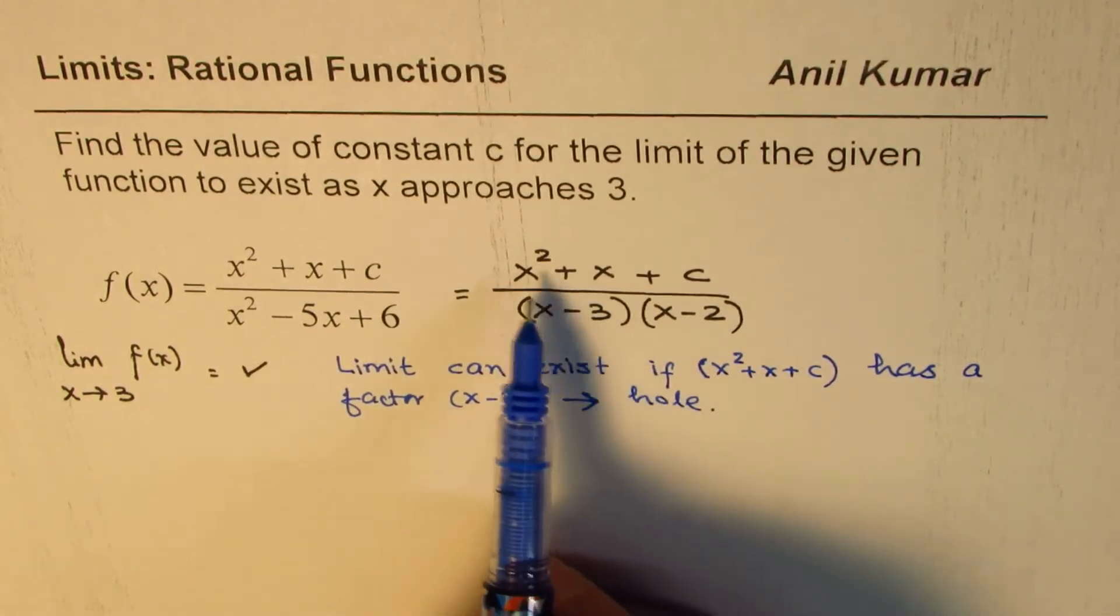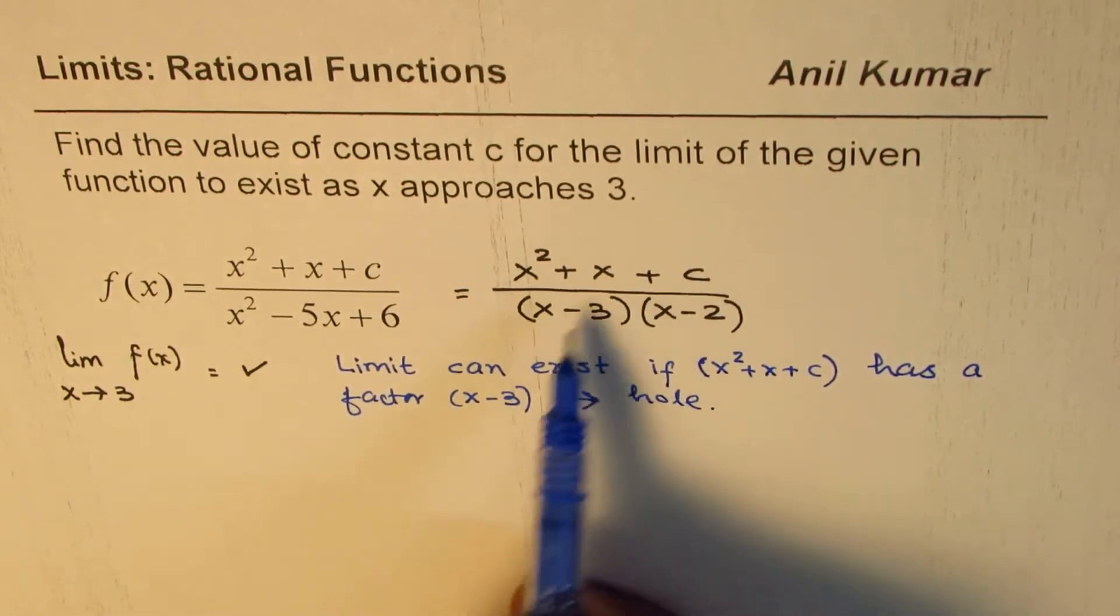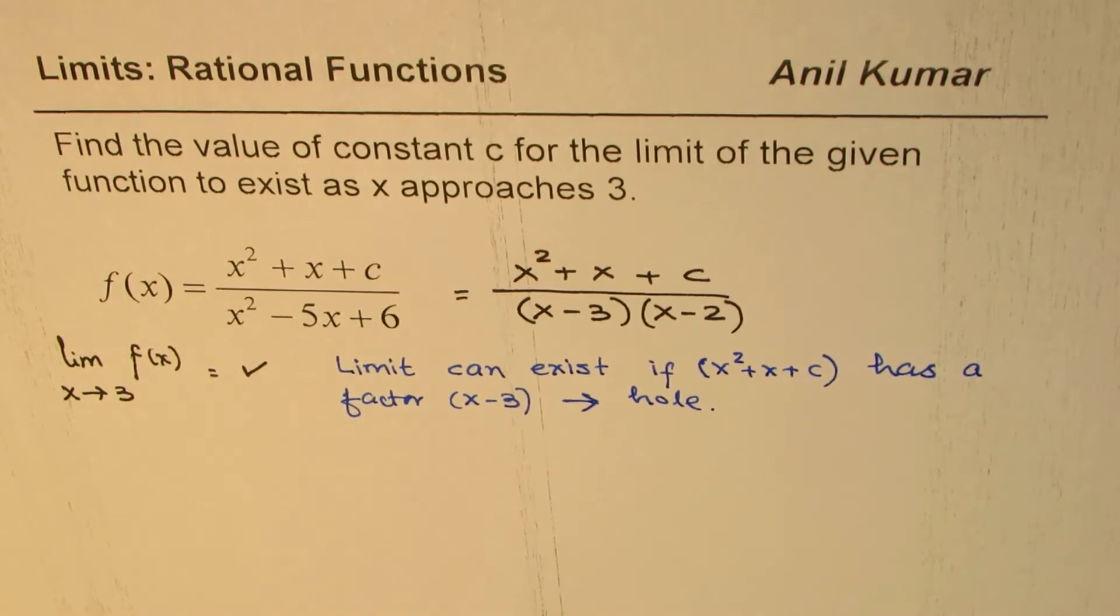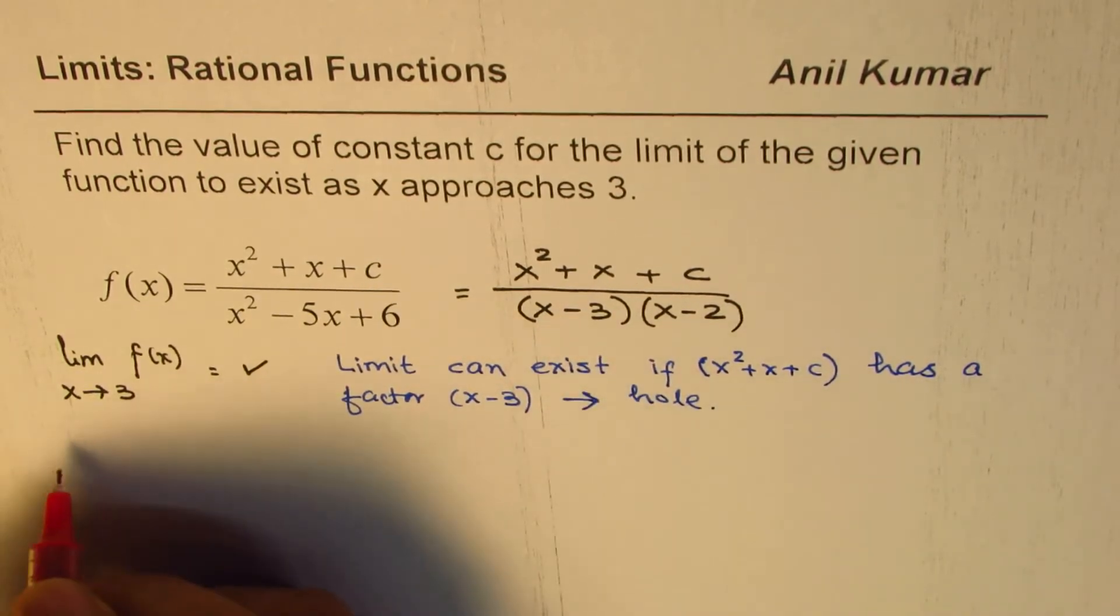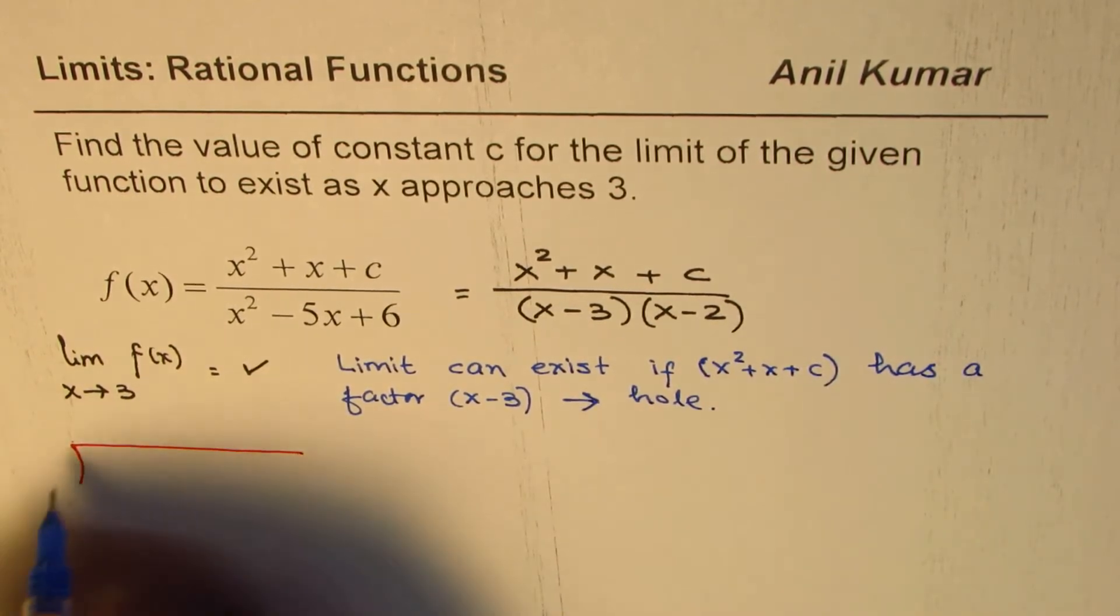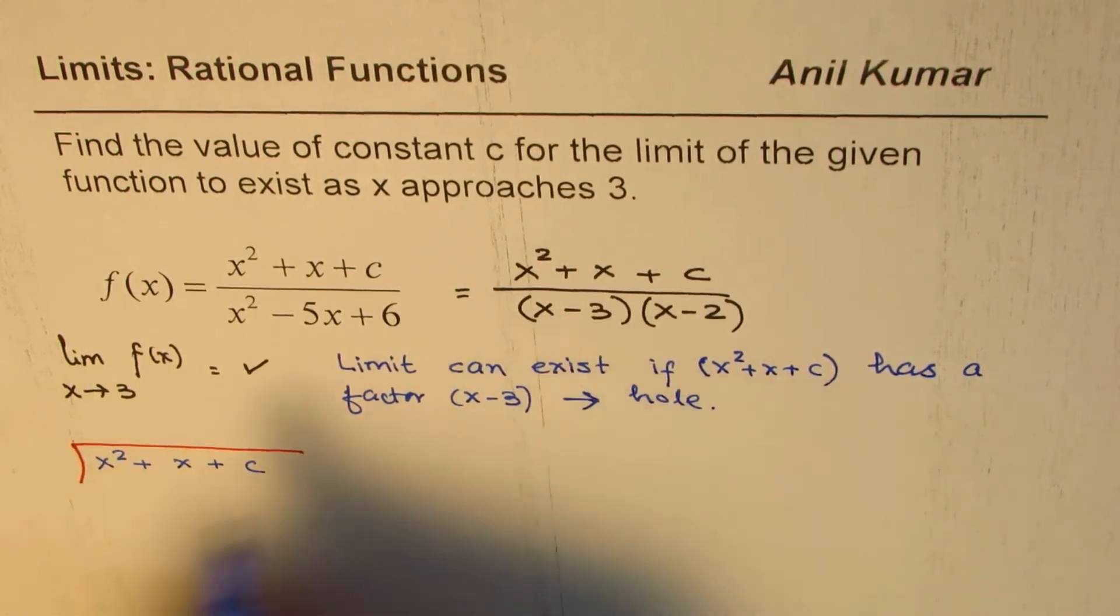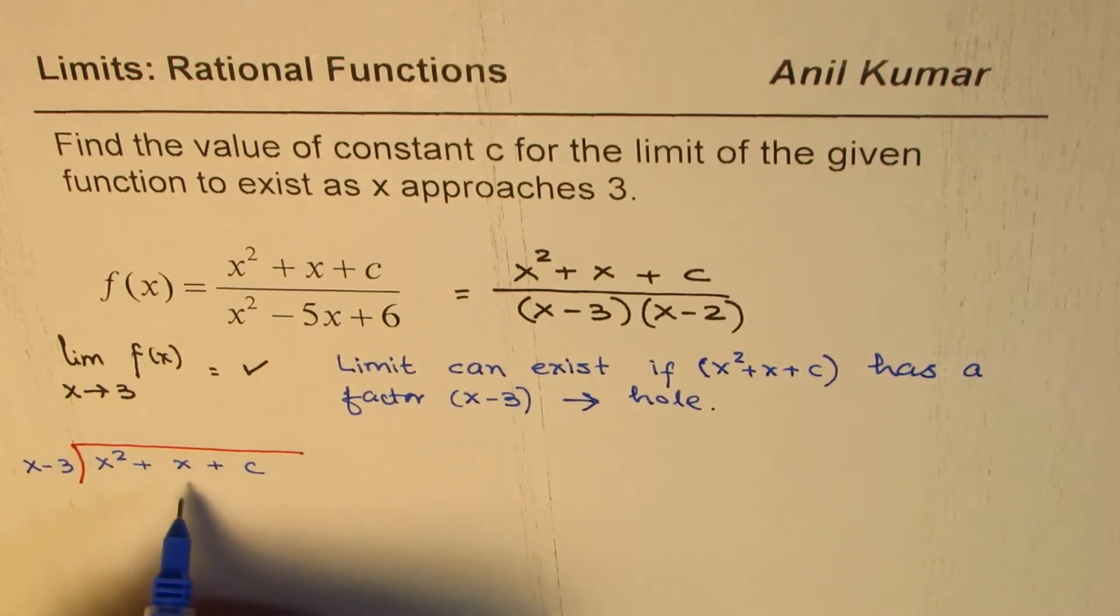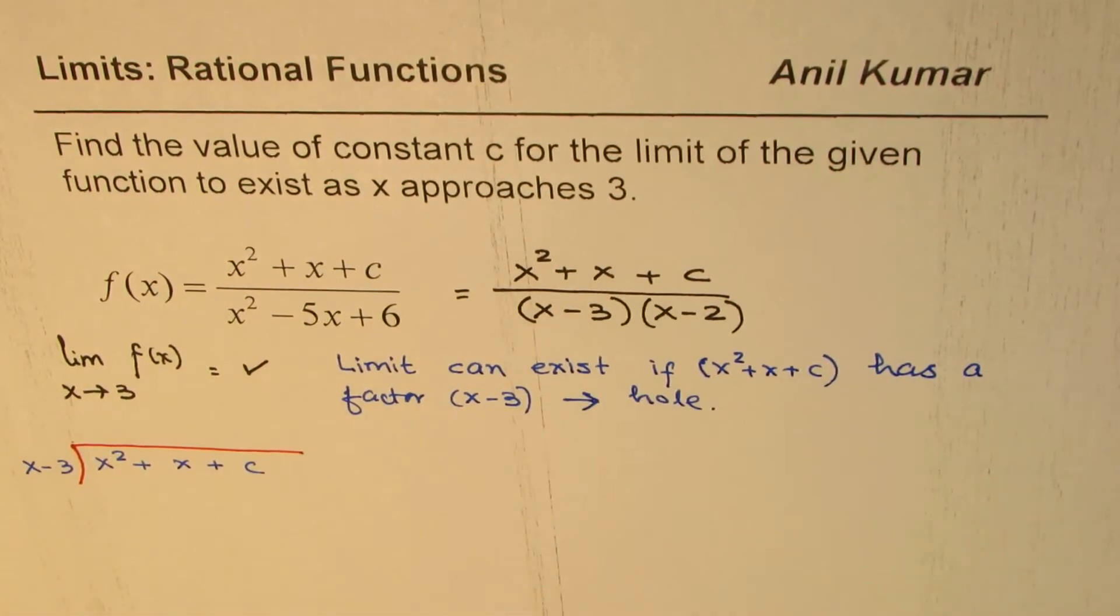Now, how to work this numerator out so that we could have x minus 3 as a factor? I'll show you two different ways of doing the same thing. One is by long division. We want x minus 3 to be the factor. So we could divide the numerator, which is x squared plus x plus c by x minus 3. So when we divide, if we get 0 remainder, then we have this as a factor in the numerator. That's the concept.